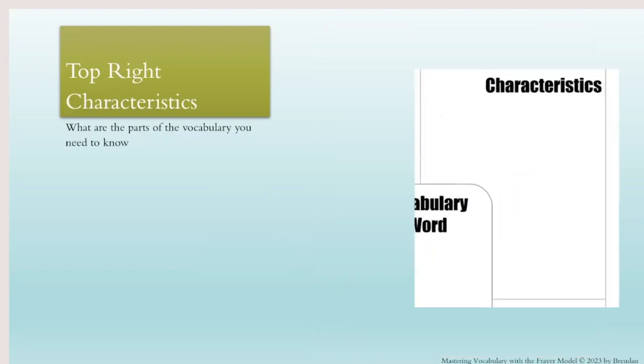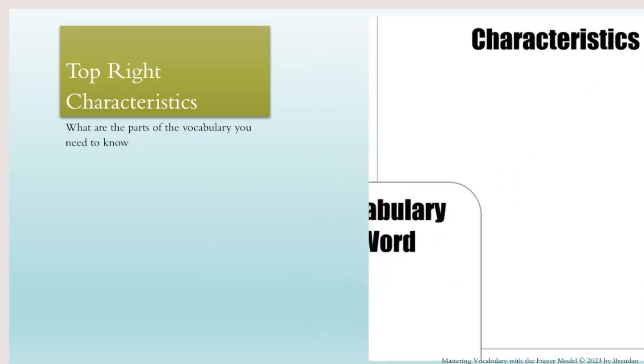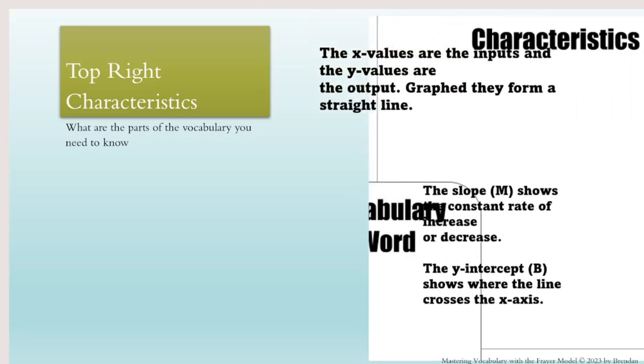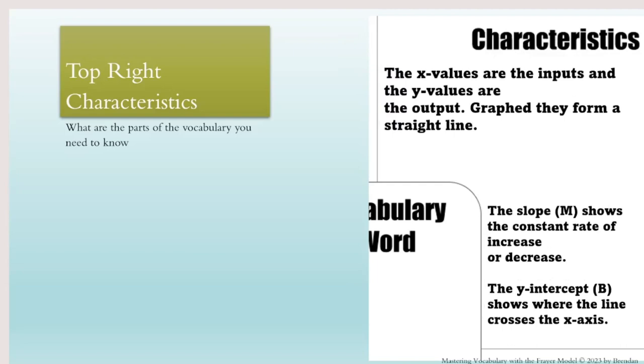Next is characteristics. This is often the hardest. You have to expand on the definition. In math we can often think about what are the keys they're looking for, or what images do we look for.